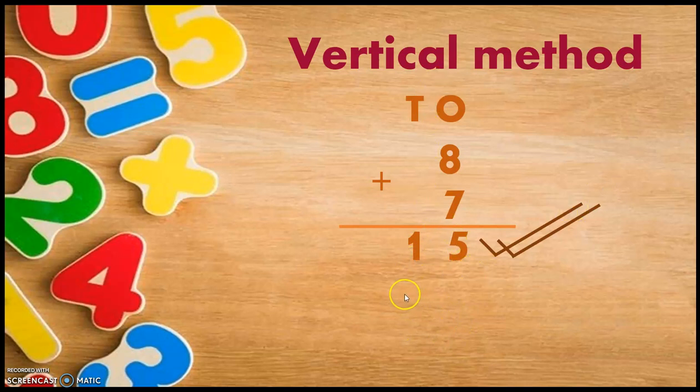So this is the correct method. I have pointed out two mistakes. One, the plus sign we have to write before the columns. And another, the answers you have to write in their respective columns - 5 in the ones column and 1 in the tens column. Thank you so much.